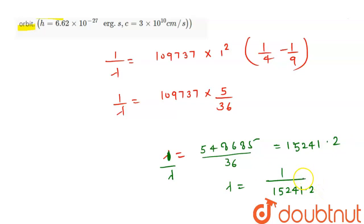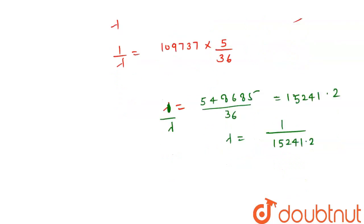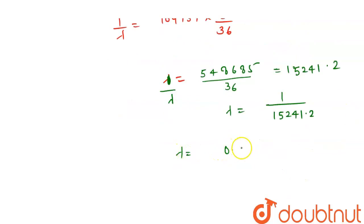Let's calculate this value. So 1 upon 15,241.2. Lambda's value निकल के आएगी 0.000065. This is coming in what units? This is coming in centimeters.